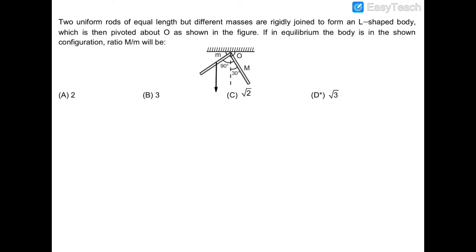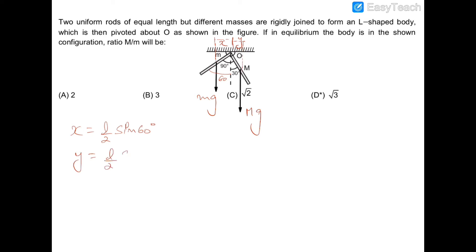The mg of each rod acts downward from its center of mass. We extend both forces and find their perpendicular distances from the pivot. The angle is 60°. The perpendicular distance for the small m rod is x = (L/2) sin 60°, and for the large M rod is y = (L/2) sin 30°. Since the system is in equilibrium, net torque is zero: mg × x = Mg × y.